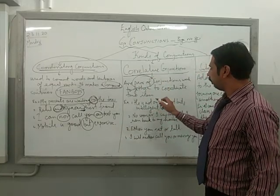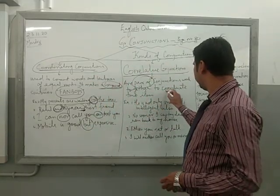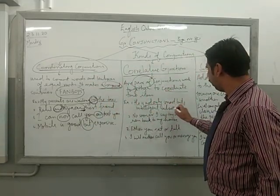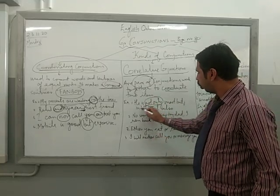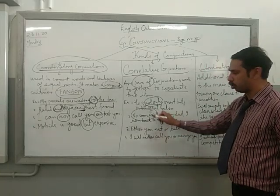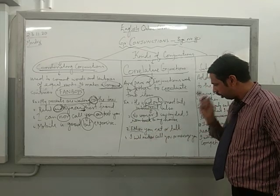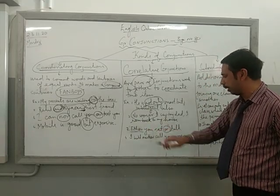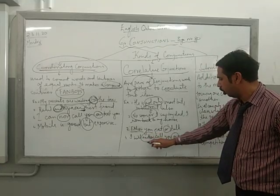When we have correlative conjunctions, they always come in pairs or groups. They are used to join and coordinate two items together. For example: 'He is not only smart but also great' — 'not only...but also' is a pair. 'No sooner did I see my dad, I went back home' — 'no sooner' is a correlative pair. 'Either you eat or talk' — 'either...or' comes in a pair. 'I will either call you or message you.'